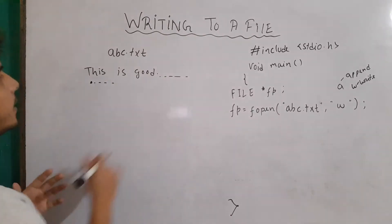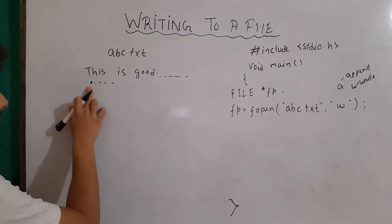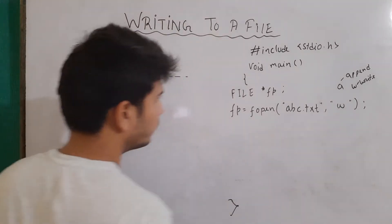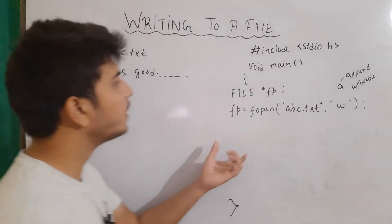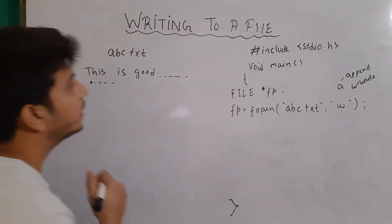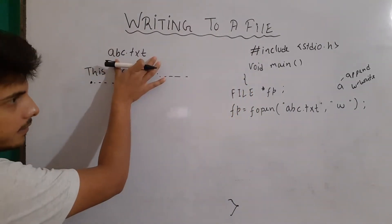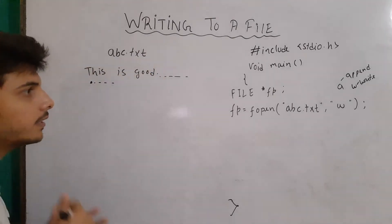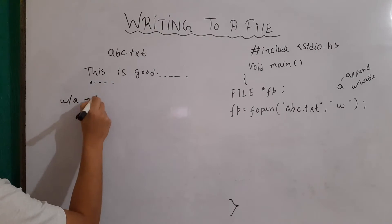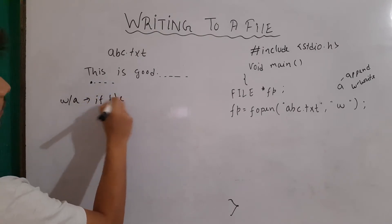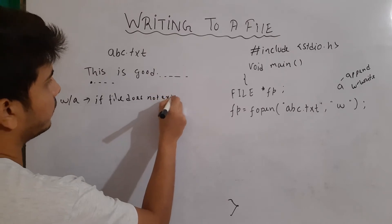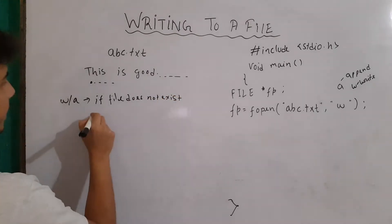Append means from the last, and the write mode means from the beginning — everything will be erased when we are using the mode as W. Now, when we are opening the file with the write mode, if the file does not exist, then it will create a file. So in W or A mode, if the file does not exist, then it will create a file.